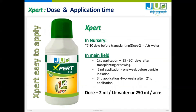EXPERT can be applied in nursery as well as in the main field. It can be applied 7 to 10 days before uprooting the nursery or before transplanting. In the main field, it can be applied 2 to 3 times depending upon the crop. The first application should be 25 to 30 days after sowing or transplanting. The second application should be one week before panicle initiation or before fruit setting. The third application is two weeks after the second application.